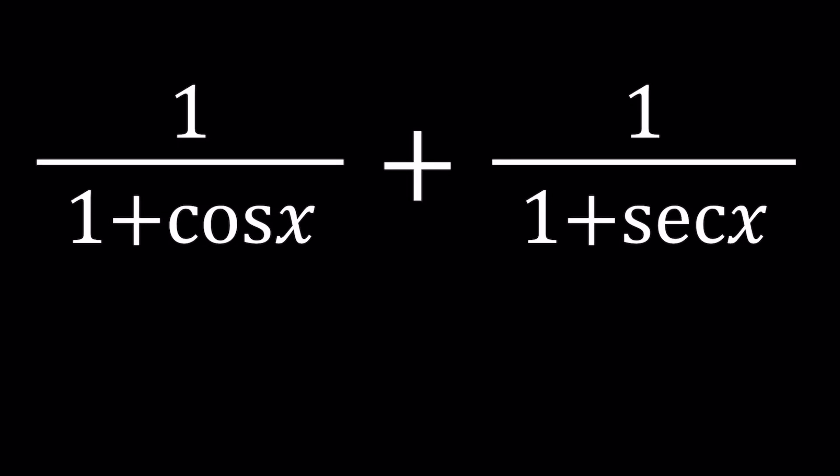Hello everyone, in this video we're going to be simplifying a quick and easy trigonometric expression. We have 1 over 1 plus cosine x plus 1 over 1 plus secant x, and we're going to write this expression in the simplest form.